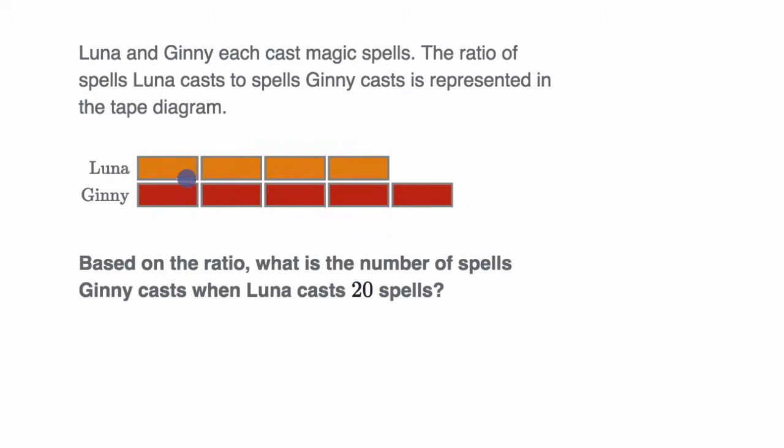All right, so let's just see the ratio here. For every one, two, three, four spells that Luna casts, Ginny casts one, two, three, four, five spells. So the ratio is four to five.